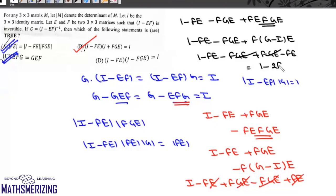Now FGE will cancel, I minus 2FE. That means this option D is incorrect, so the correct options are A, B, and C.